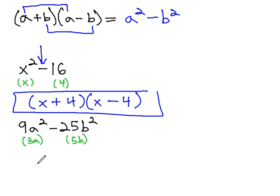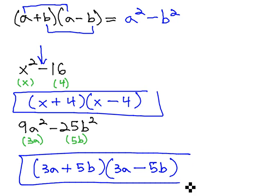If this is the case, it's going to factor to the sum and difference of the square roots: 3a plus 5b, and 3a minus 5b for our final solution.